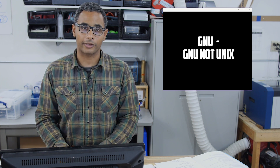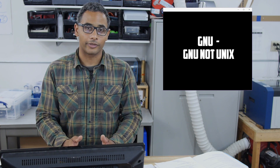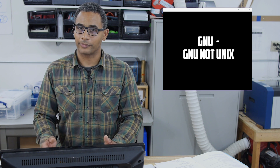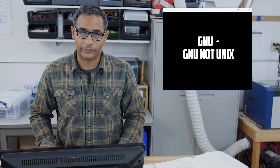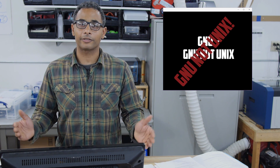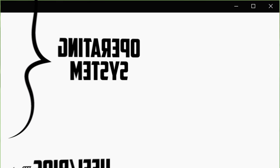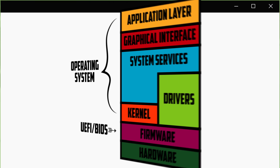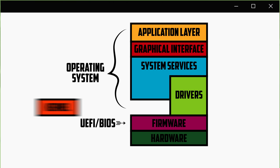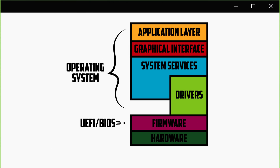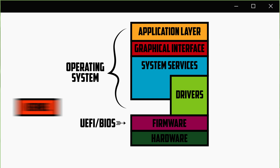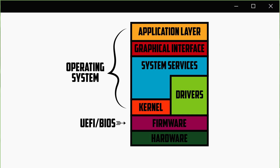GNU stands for 'GNU is Not UNIX' — it's a recursive acronym, meaning the first word in the acronym is the acronym itself. GNU is a whole host of software that is everything except for the kernel. It's almost a complete operating system minus the kernel. So when you combine GNU and the Linux kernel, you then have a complete operating system.